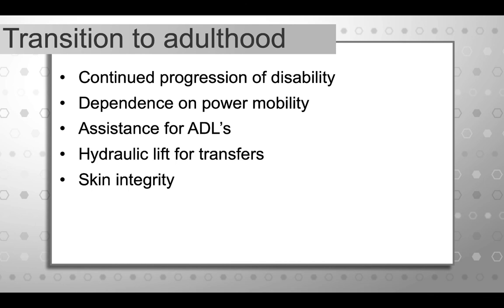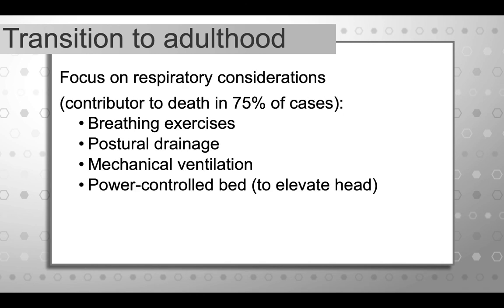The transition to adulthood is another major challenge for men with muscular dystrophy and their families. By adulthood, almost all men with muscular dystrophy are dependent on power mobility and require assistance for ADLs, often needing lifts for transfers. Skin integrity starts to become an issue, as adult skin is less elastic and heals more slowly than children's, making pressure ulcers a greater risk. A big focus becomes respiratory considerations, since respiratory issues are a contributor to death in the majority of cases. We focus on breathing exercises, postural drainage, positioning, and mechanical ventilation often becomes part of these men's lives.